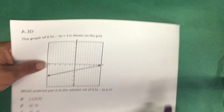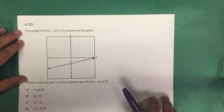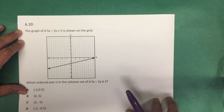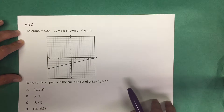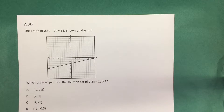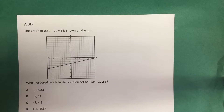Let's look at a released assessment item. This problem is from the 2016 Algebra 1 STAAR EOC exam. The graph of 0.5x minus 2y equals 3 is shown on the grid. Which ordered pair is in the solution set of 0.5x minus 2y is greater than or equal to 3?